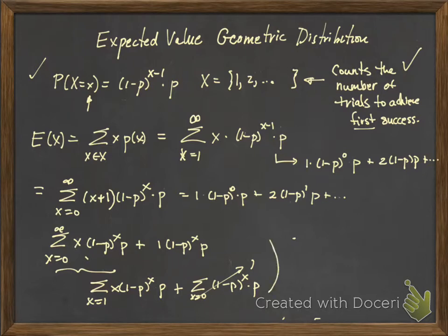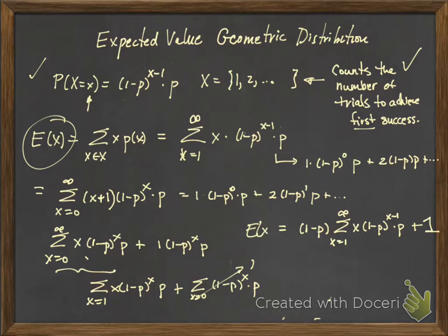So I'm going to come up here and I'm going to pull off one of my factors of 1 minus P. So 1 minus P comes out and I'm left with X equals 1 to infinity, X times 1 minus P to the X minus 1 times P and then we have this plus 1 over here. And don't forget that all of this is equal to what we originally started with, E of X, okay? Now here's where we notice that this sum right in here is the same as this sum right here, right? So we have an E of X embedded within our formula. So we have E of X is equal to 1 minus P times E of X plus 1.